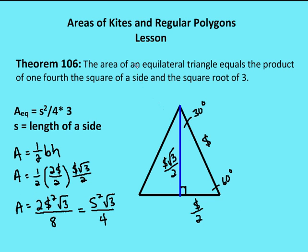Now let's talk about theorem 106, which is the area of an equilateral triangle equals one-fourth of the square of a side times the square root of three. I have an equilateral triangle here — all angle measures are 60 degrees. I've created an altitude from the vertex down to the base, creating a 30-60-90 triangle, with all sides identified as S.